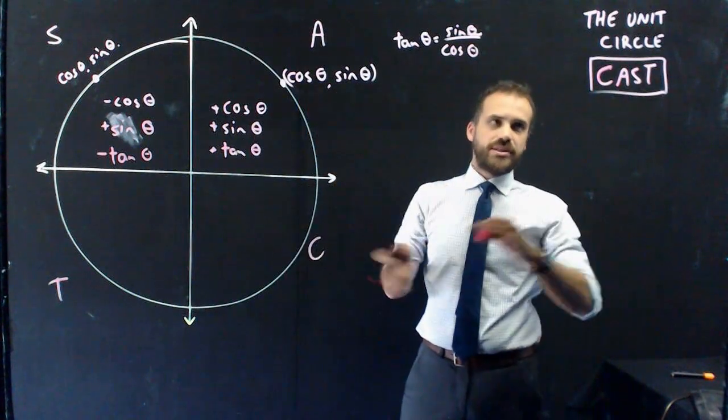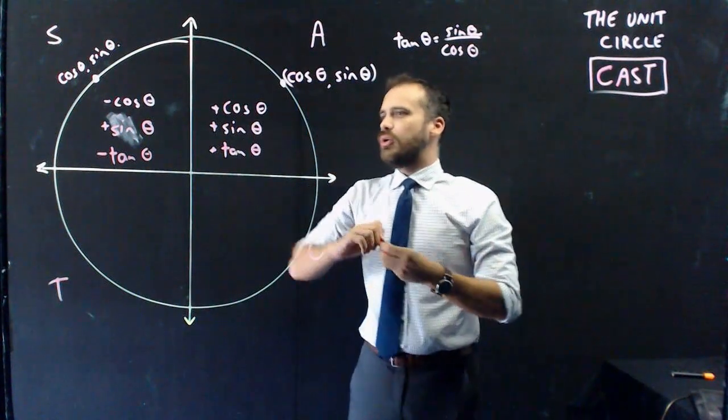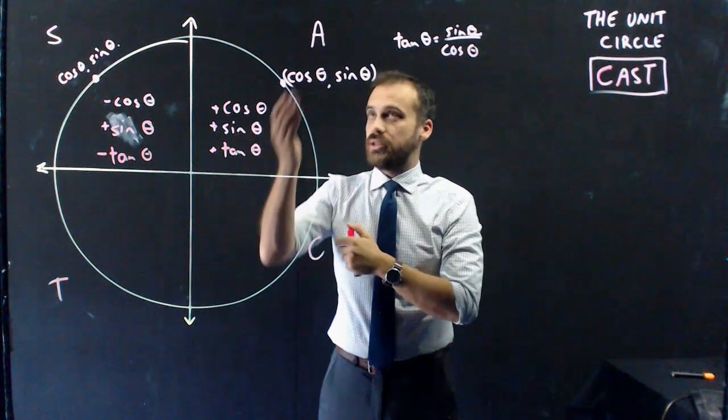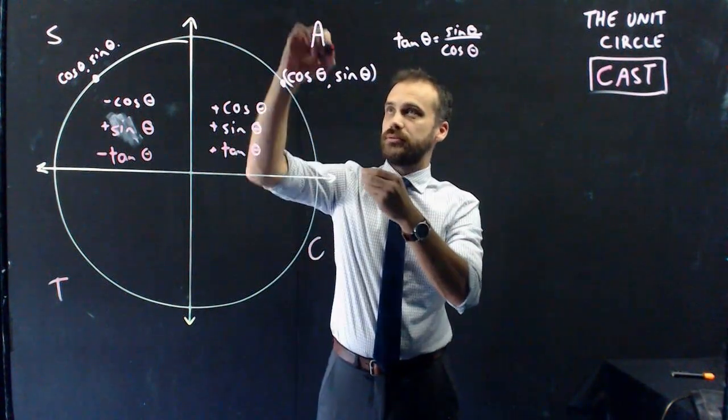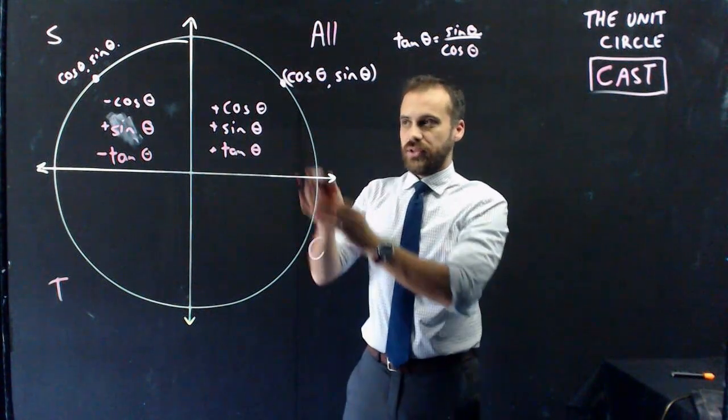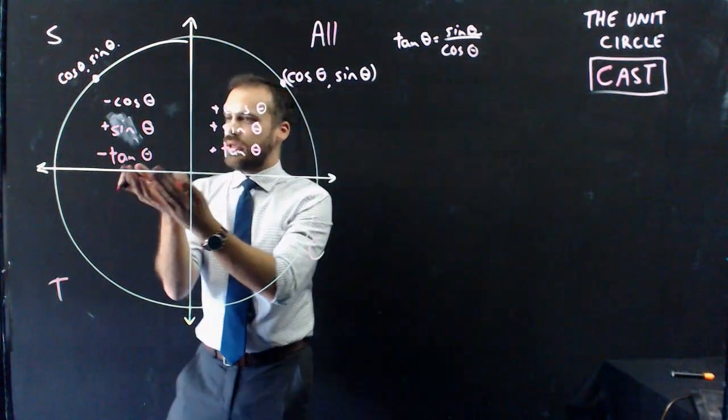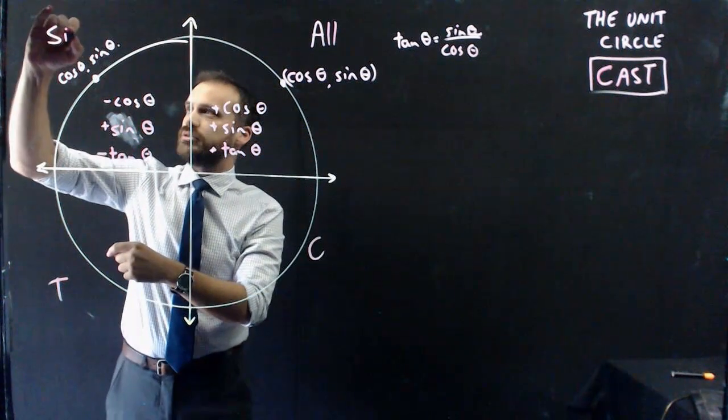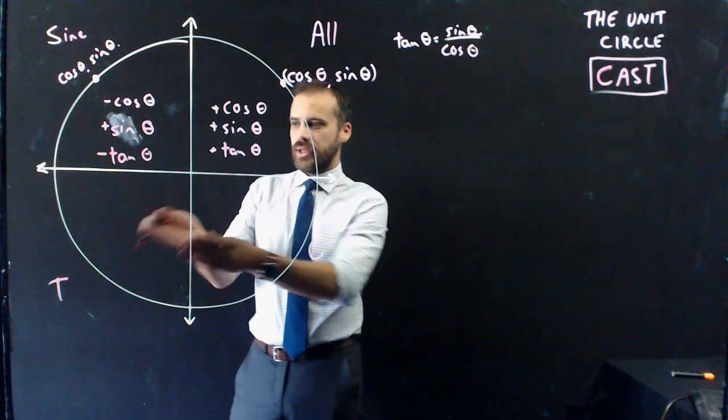Now, I started this video by saying we're talking about cast. All the trig ratios, cos, sin, and tan, all are positive in this quadrant. In this quadrant, only the sin ratio is positive.